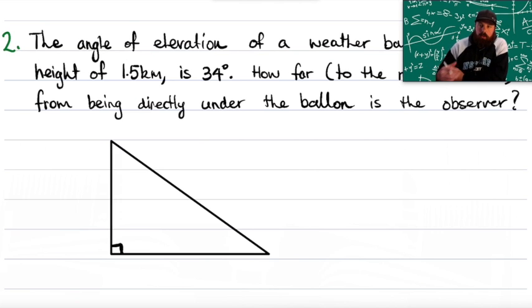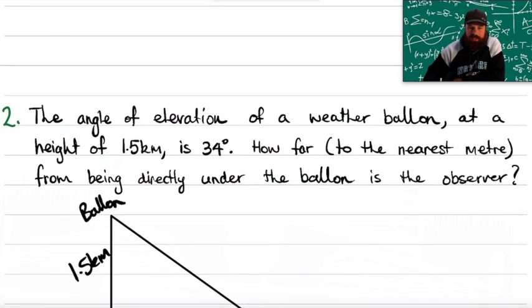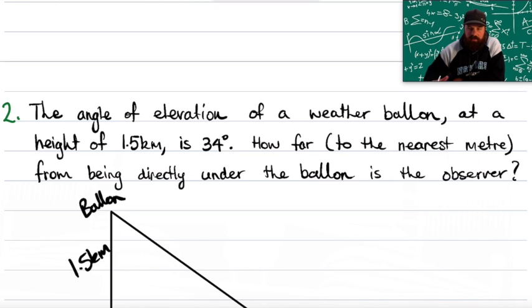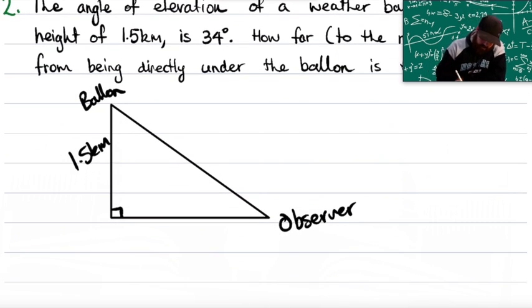Now we know that the weather balloon is up. So here is the balloon, and we know that there's an observer. We know the balloon is 1.5 kilometers in the air. When we go back to the question, it's the angle of elevation of a balloon, and it's all referring to where is this observer. So the angle of elevation in this question is from the observer.